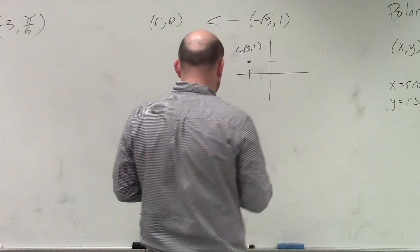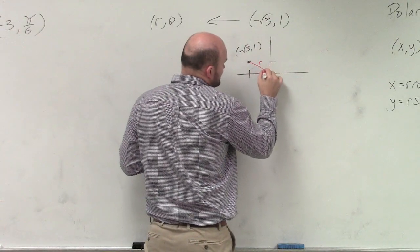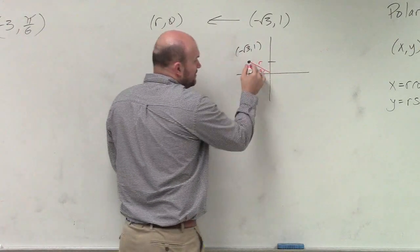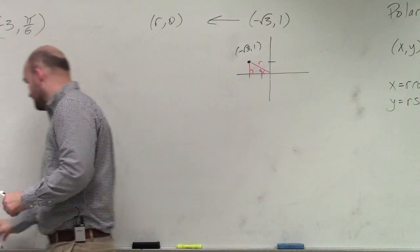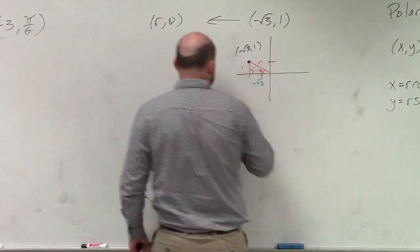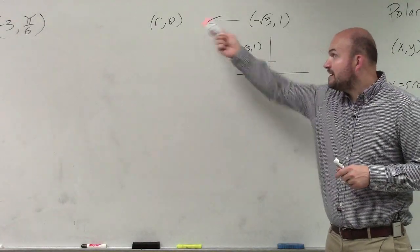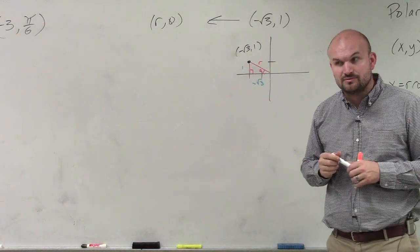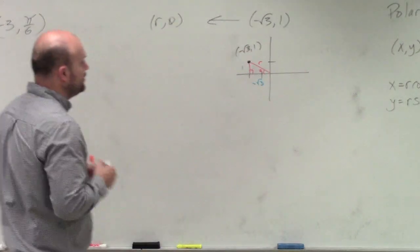And again, we're trying to write this in rectangular form, meaning we're trying to find this length r and this angle theta. So again, create a triangle. We know this horizontal distance is negative square root of 3, and we know the vertical distance is 1. So we have enough information to find r, and do we have enough information to find theta? There's no magic formula you guys need to memorize. It's the same stuff we've been doing over and over.